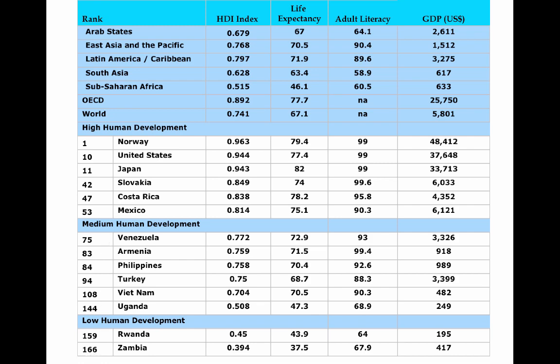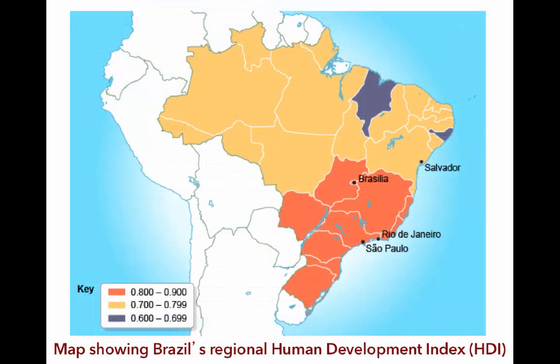If we zoom in closer, we can see that within countries there are definitely disparities. For example, in Brazil, in the southeast area you see a higher level of human development, and along the interior you see lower levels, and even lower still.